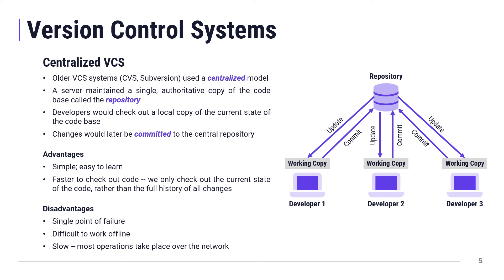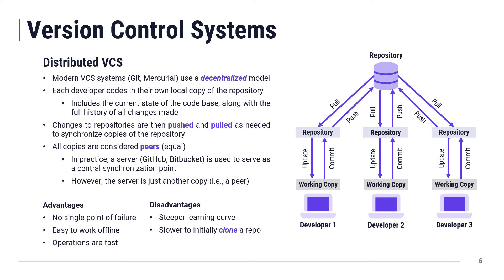The disadvantage of centralized systems is a single point of failure. If the central server fails, you can't work effectively — most operations require contacting that server. It's also difficult to work offline, such as on an airplane with no internet access, and because everything has to contact the server over the network, these systems tended to be slow.